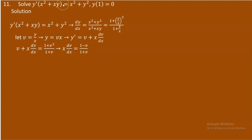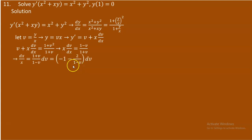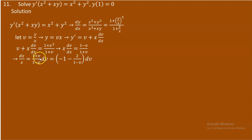This is now separable — homogeneous differential equations are reducible to separable form. Separating variables gives dx/x = (1 + v)/(1 − v) dv. Before integrating, we must divide (1 + v) by (1 − v) using long division, since both numerator and denominator have degree one.